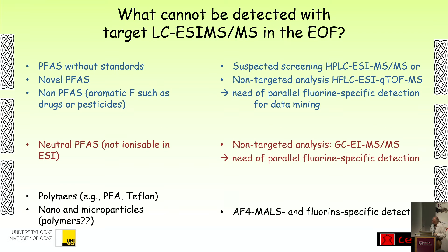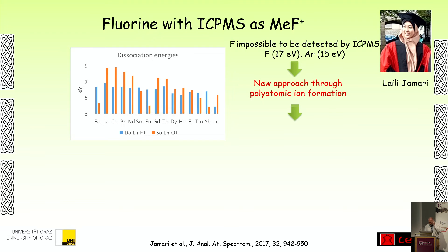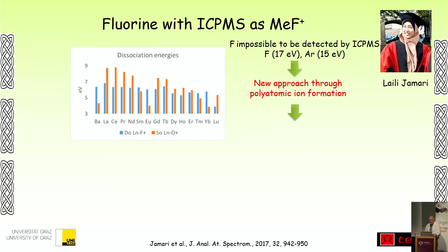There are polymers that are not tackled at all, and this is what you could do by combining flow fractionation with fluorine-specific detection. A few years back, in the PhD work of Laila Jabari, we thought — let's use ICP-MS. But as you know from the first lecture of analytical chemistry, you cannot analyze fluorine by ICP-MS because of the high ionization potential. But why not look at interferences — specifically metal-fluorine clusters which have a high dissociation energy with fluorine rather than with oxygen? There are a few candidates: barium, europium, and deuterium.